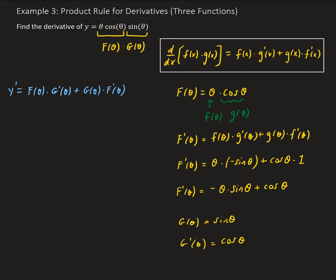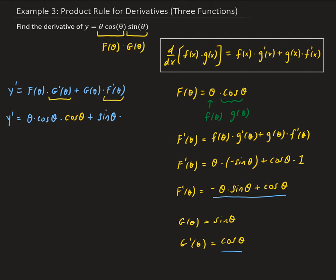So we're going to go ahead and plug these back into y prime. F of θ is θ times cosine θ, times G prime of θ which is cosine θ, plus G of θ which is sine θ, times F prime of θ — which was the expression minus θ sine θ plus cosine θ.